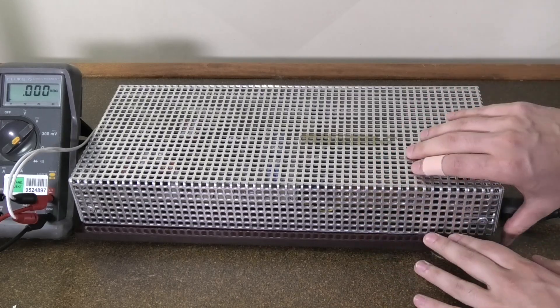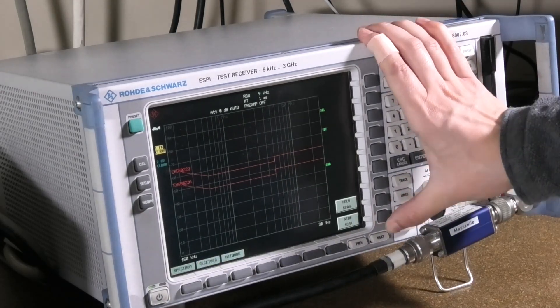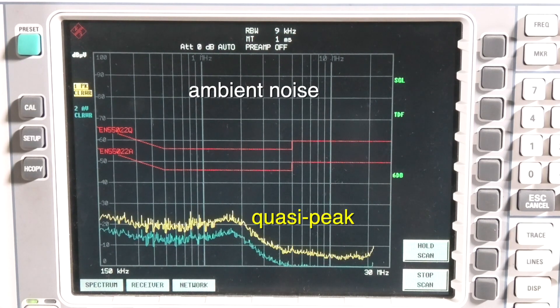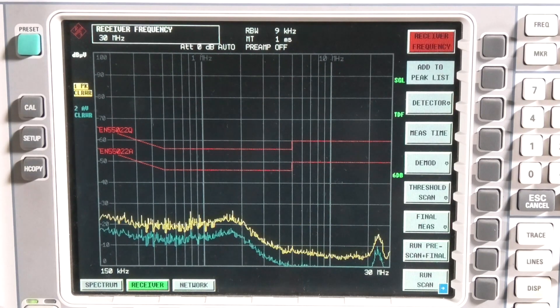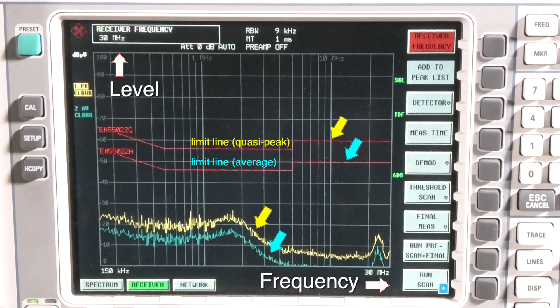The first measurement you should always perform is a measurement without any load. So, what we see here is just ambient noise. The yellow and blue lines are our measurement results, measured with two different detectors: quasi peak and average. We will explain everything in detail in a later video. The important thing for now is, the x-axis shows the frequency, the y-axis the interference level. The yellow and blue lines must each be below the corresponding red limit line. If this is not the case, we are not allowed to sell our product.